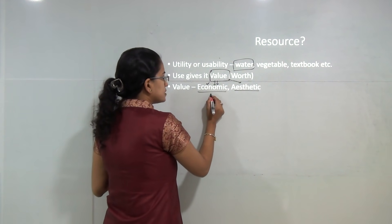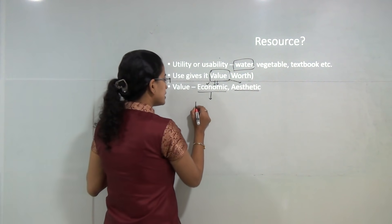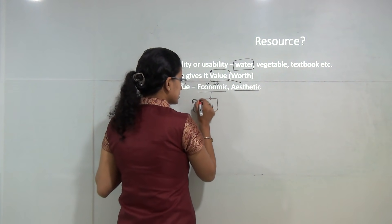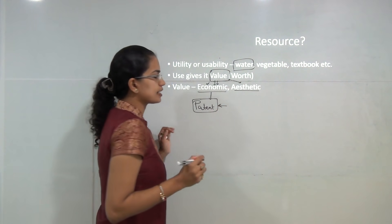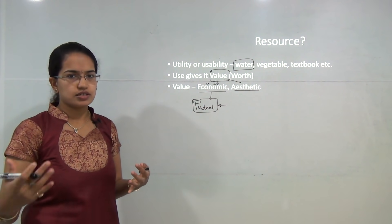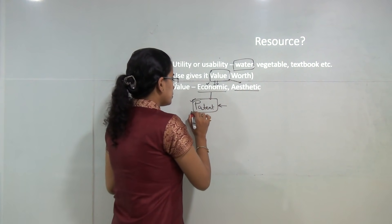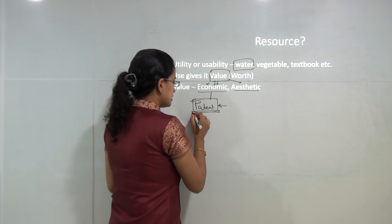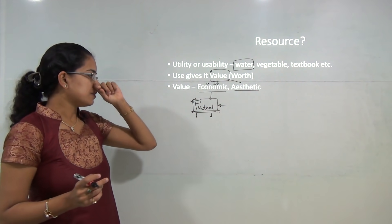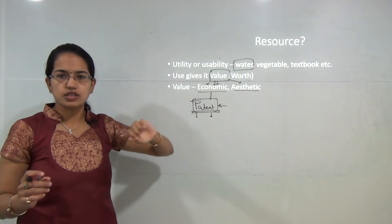Sometimes economic value is added in such a manner that a kind of patent comes up. A patent is a term used to indicate a kind of branding for something that you have innovated or discovered on your own, and you want that to be in your name. There are various patents released by India, the United States, and globally, and those patents work around the various values for the resources.